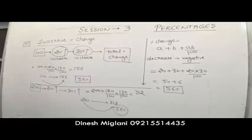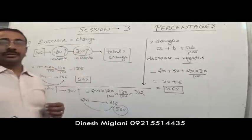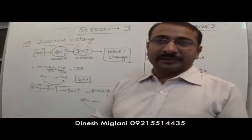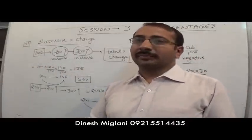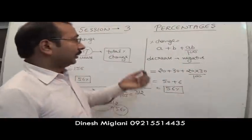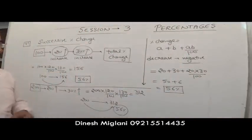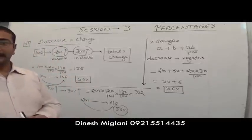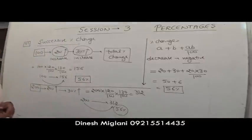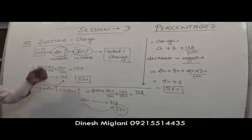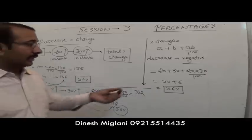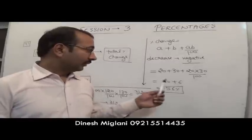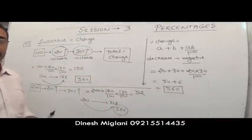This formula is used when a number is successively changed by a few percentages. Apply a + b + ab/100: increase is positive, decrease is negative. For 20% then 30% increase: 20 + 30 + (20 × 30)/100 = 56%.